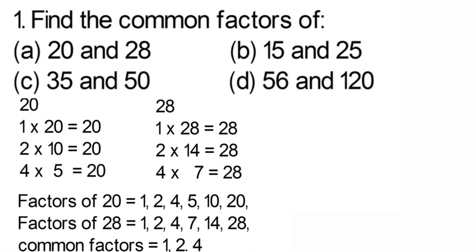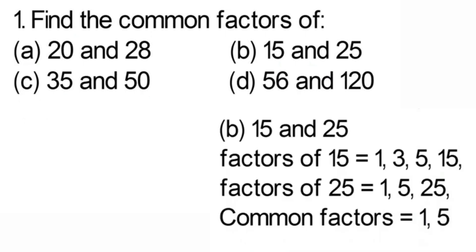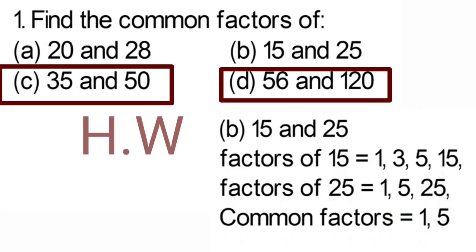You just take out the factors first and then identify which ones appear in both numbers. Part B: find the common factors of 15 and 25. Factors of 15: 1, 3, 5, 15. Factors of 25: 1, 5, 25. Common factors are 1 and 5 only. The rest of the parts you will do on your own.